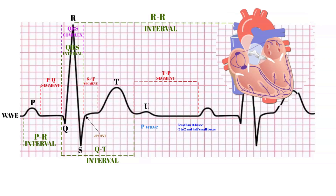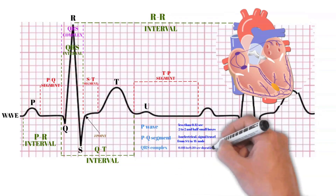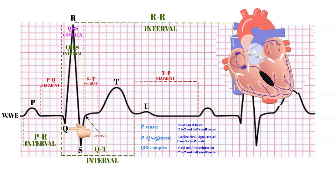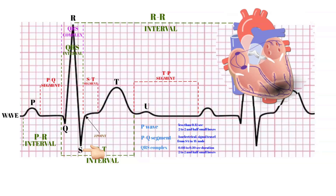The PQ segment represents the time signals travel from the SA node to the AV node. The QRS complex represents the depolarization of the ventricles and appears as three closely related waves on the ECG: the Q wave, which corresponds to depolarization of the interventricular septum; the R wave, produced by depolarization of the main mass of the ventricles; and the S wave, representing the last phase of ventricular depolarization at the base of the heart. Atrial repolarization also occurs during this time but is obscured by the large QRS complex and will not appear on the ECG graph.